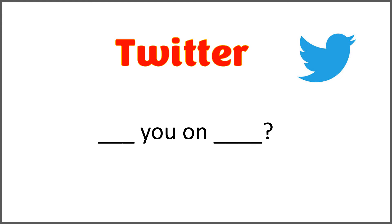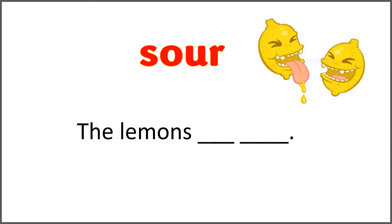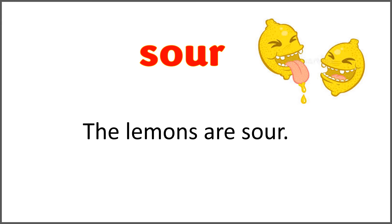The given word is 'Twitter' and the sentence is 'blank you on blank?' Use 'are' with 'Twitter' to complete the sentence. And the answer is: are you on Twitter? The given word is 'sour' — the lemons blank blank. Use 'are' with 'sour' to complete the sentence. And the answer is: the lemons are sour.